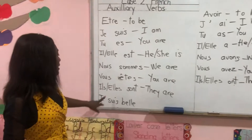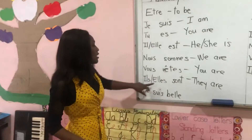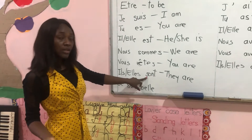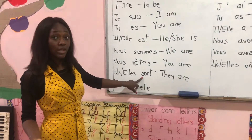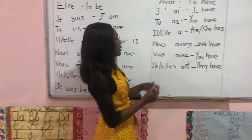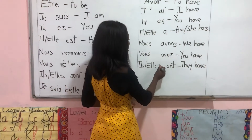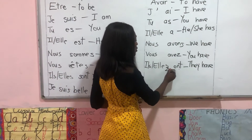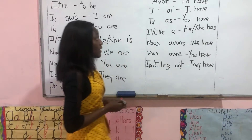Now with ils sont, there is no liaison here. But with ils ont and elles ont, there is a liaison — the S changes to a Z sound.